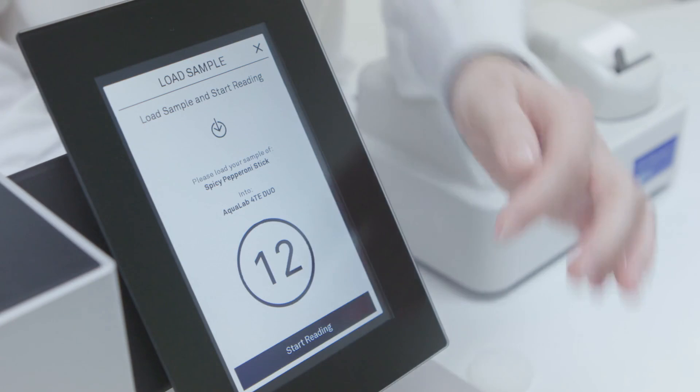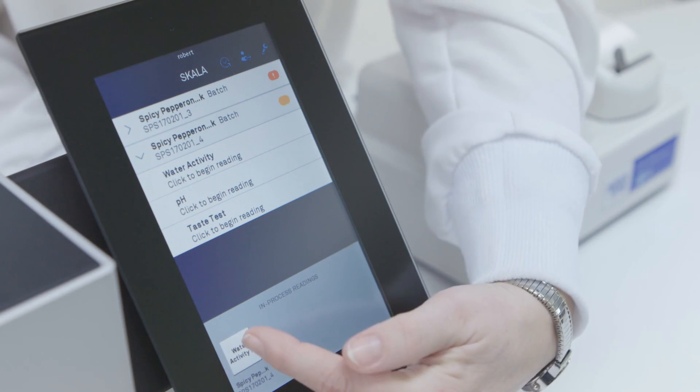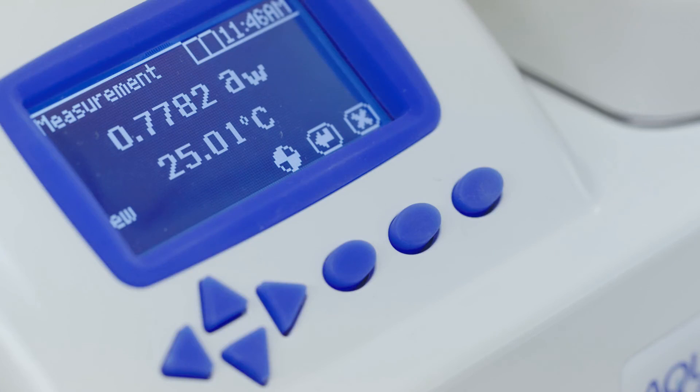In one or two minutes a preliminary number will show. The spinning wheel at the bottom of the screen indicates the Aqualab is still checking to see if the sample has stabilized. If you are recording readings manually, you can listen for the beep that shows that the instrument is done.